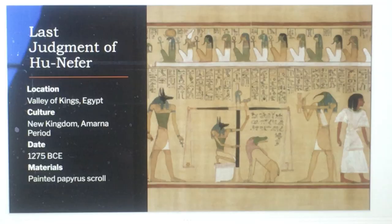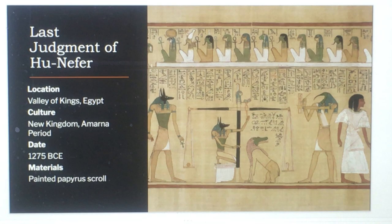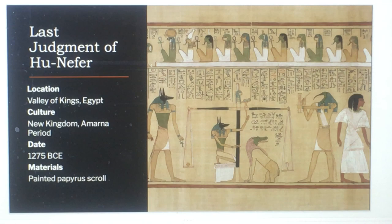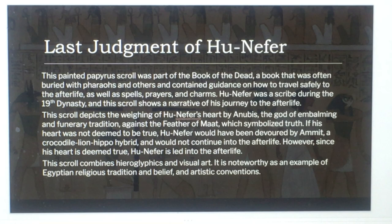The Last Judgment of Hunefer is located in the Valley of the Kings, New Kingdom, Amarna period, 1275 BCE, and it's a painted papyrus scroll. It was part of the Book of the Dead, a book often buried with pharaohs and others that contained guidance on how to travel safely to the afterlife, as well as spells, prayers, and charms.